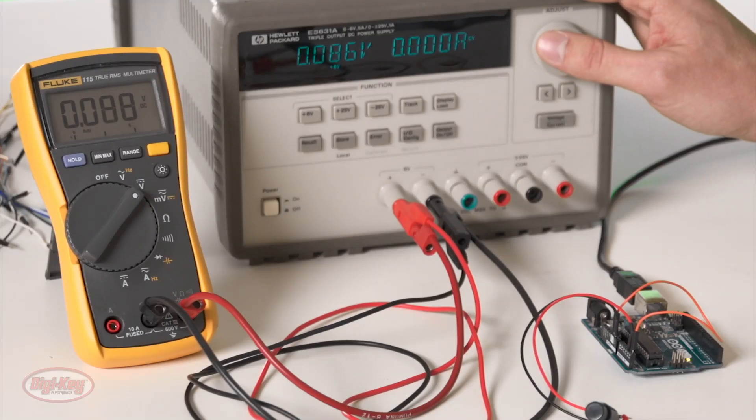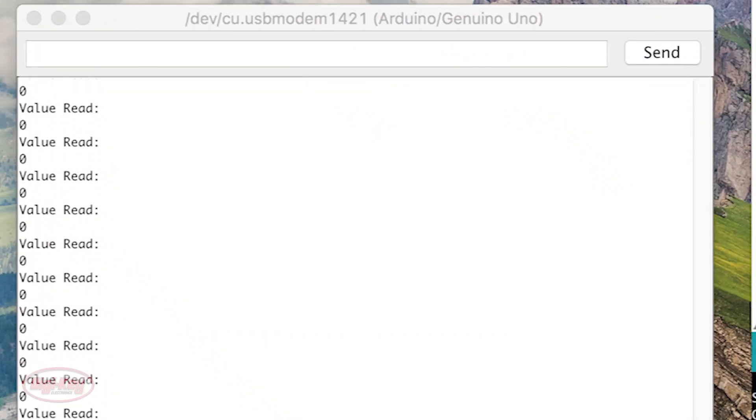So right now I'll put 100 millivolts, 0.1 volts, and we are reading about 19 on the ADC. It's jumping between 18 and 19.